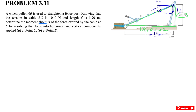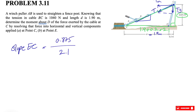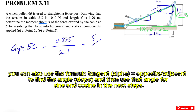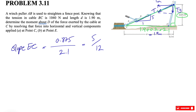Based on the Pythagorean theorem we can find the hypotenuse. The slope of line EC is 0.875 divided by 2.1, which simplifies to 5 divided by 12. So this side is 5, this side is 12, and by the Pythagorean theorem the hypotenuse is 13.